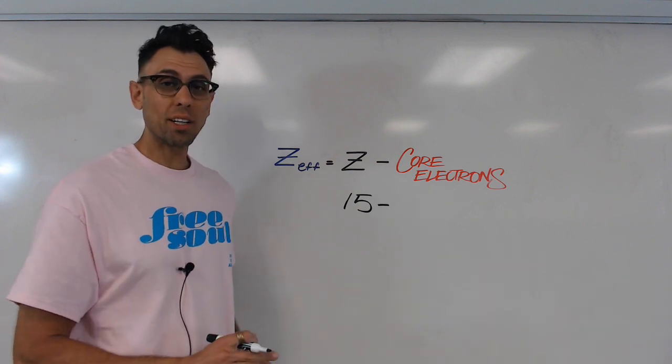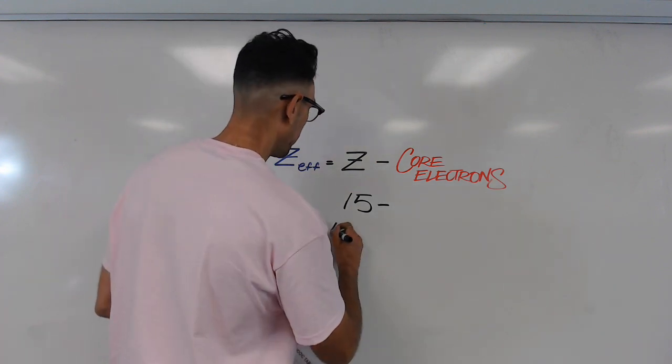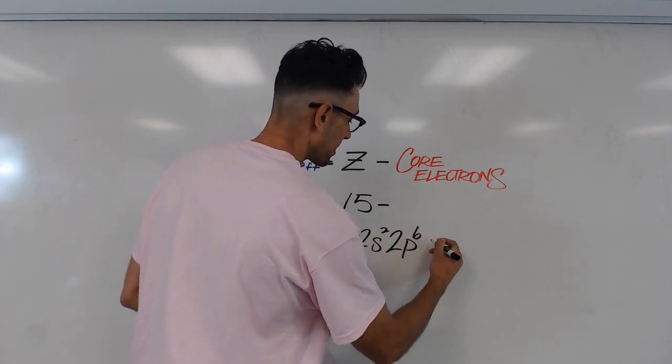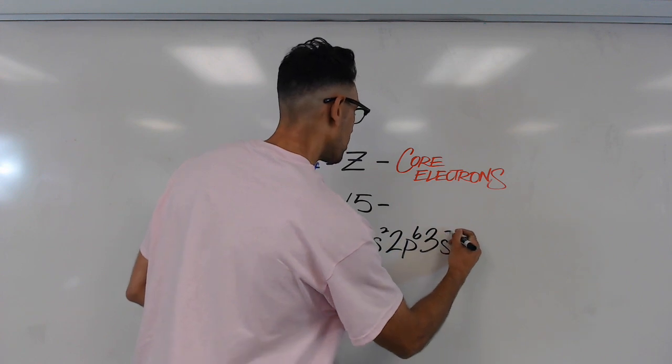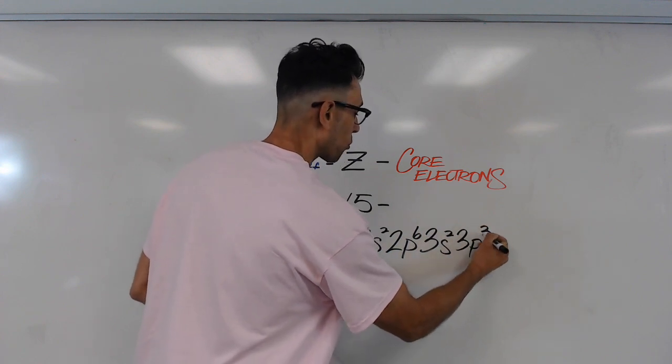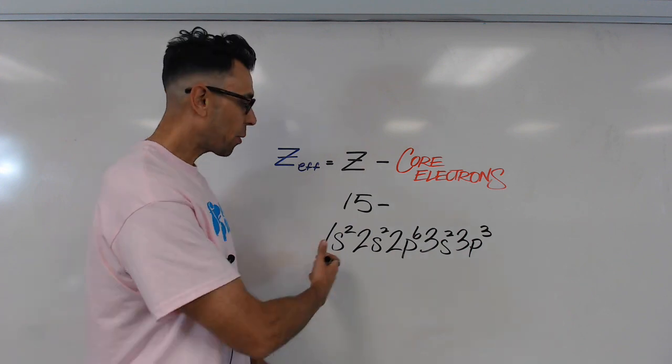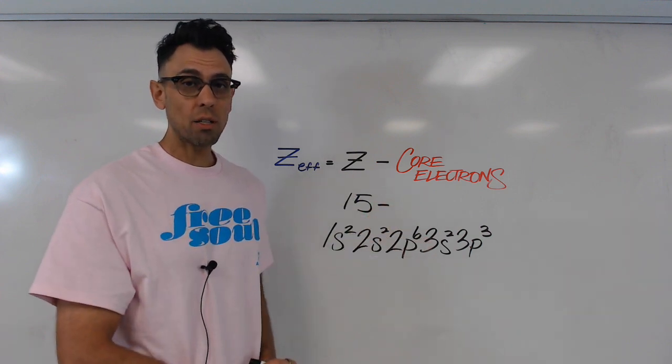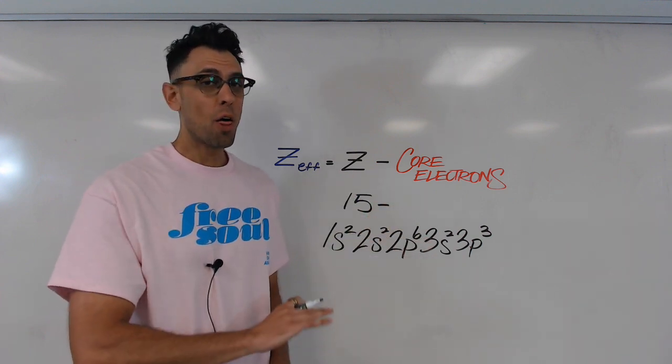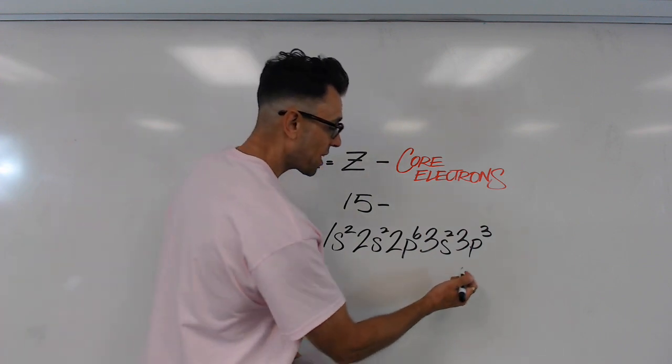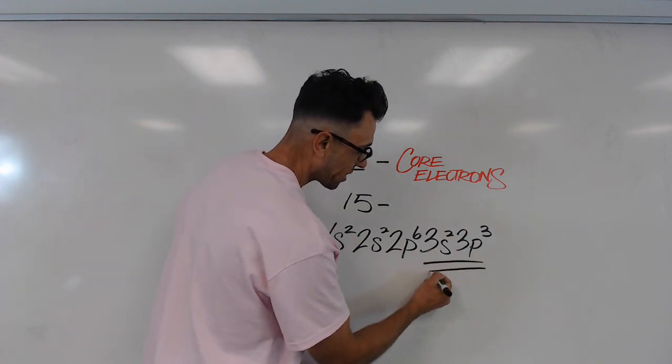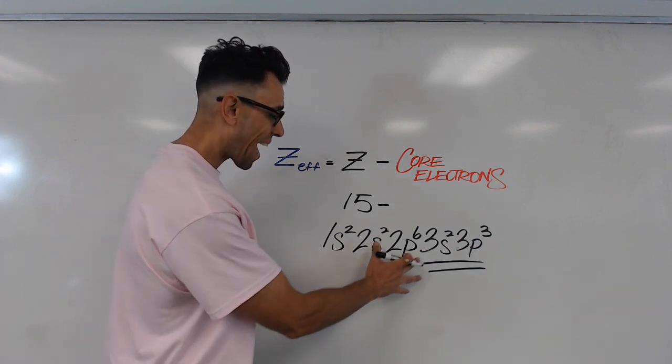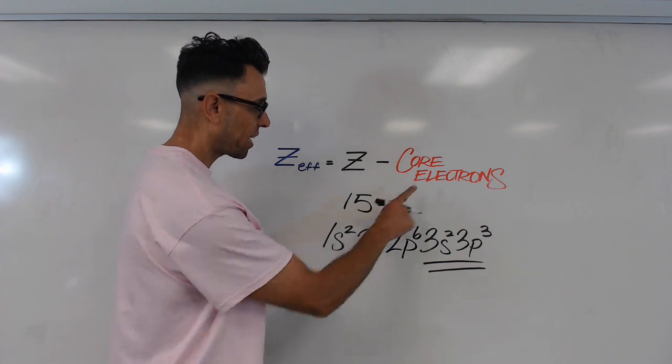So phosphorus has an electron configuration of 1s2, 2s2, 2p6, 3s2, and 3p3. So here we can see all of the electrons arranged by their energy level. Now remember, the outermost electrons, the valence electrons, those are not core electrons. So these are the electrons in my valence level, or the outermost level of the configuration. So that means everything else is a core electron.